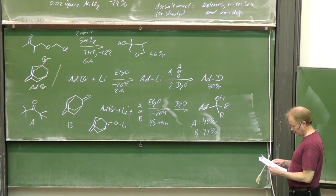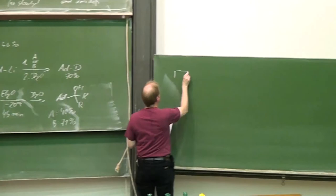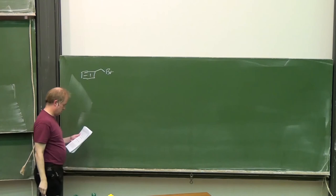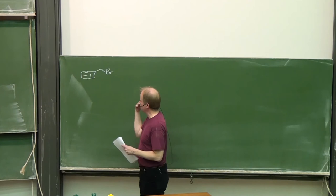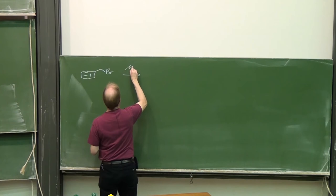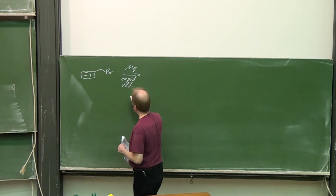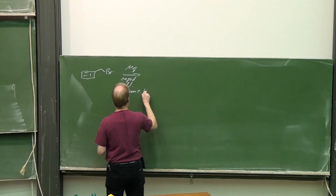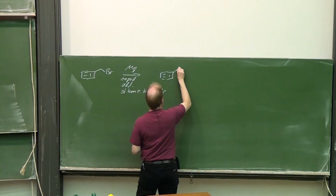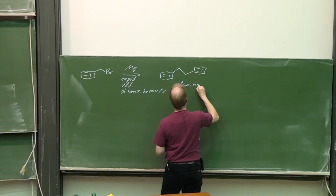Another example where we have problems with the normal Grignard formation is benzylic bromide, out of the same reason, because the benzylic radical is stabilized. Just with magnesium and rapid addition of the bromide, this diphenylethane is the dominant product.